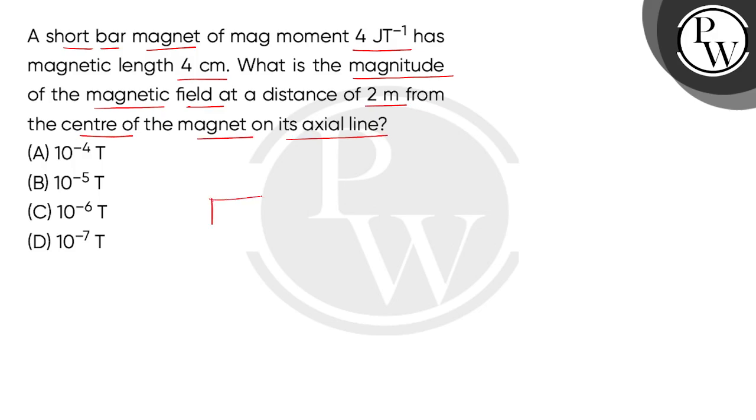So guys, let's draw it first. Let this be the bar magnet. Now, when we see the dipoles, north pole and south pole, and when we join them in a straight line, which is the center of the magnet, we express the magnetic length as twice of L.